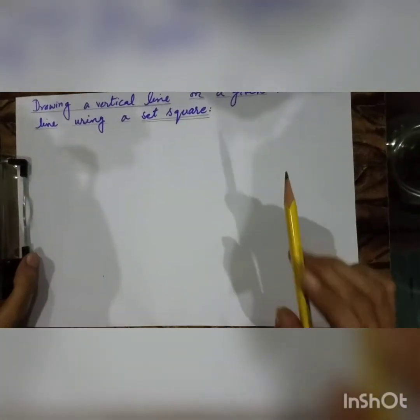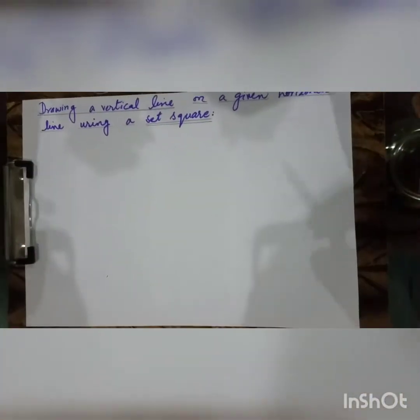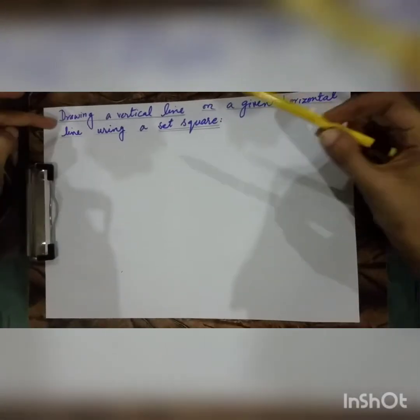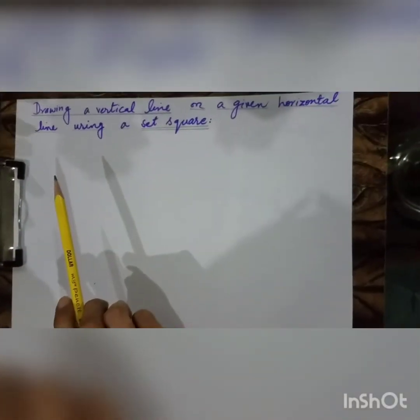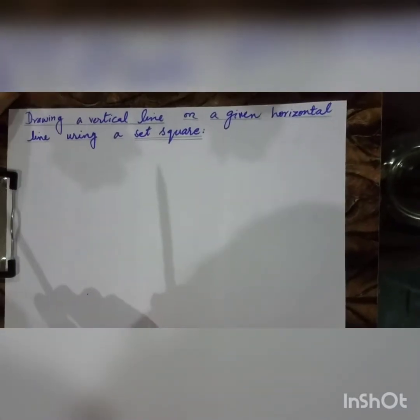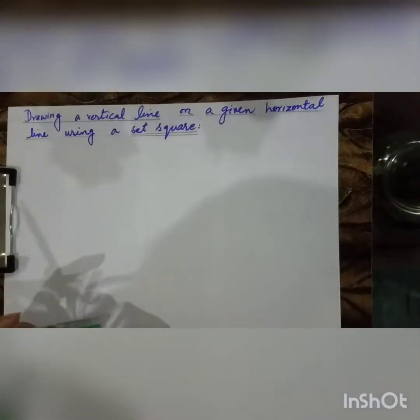Assalamu Alaikum everyone. Today we are going to discuss how to draw a vertical line on a given horizontal line using a set square. First, the question is: what is a vertical line?